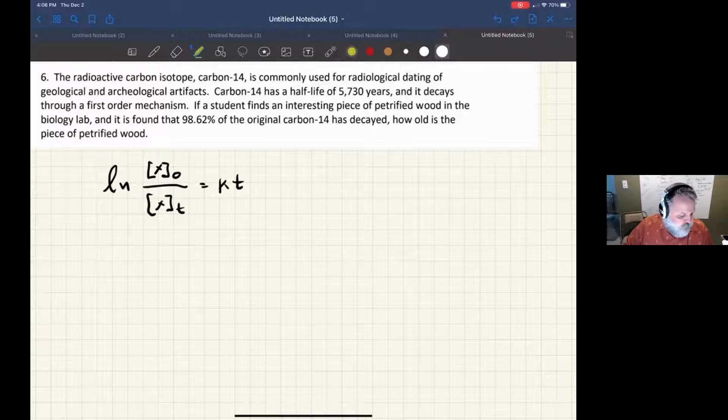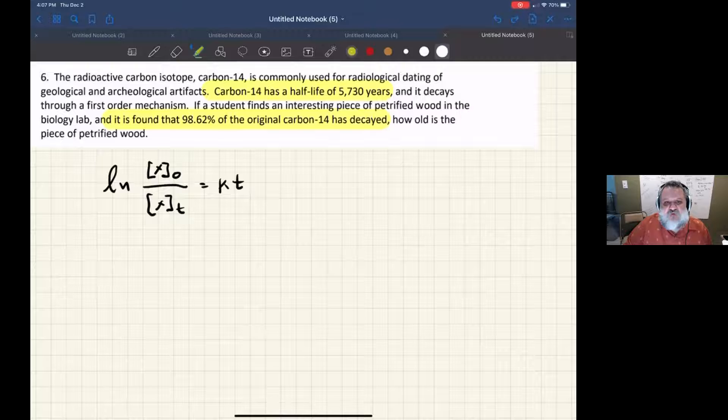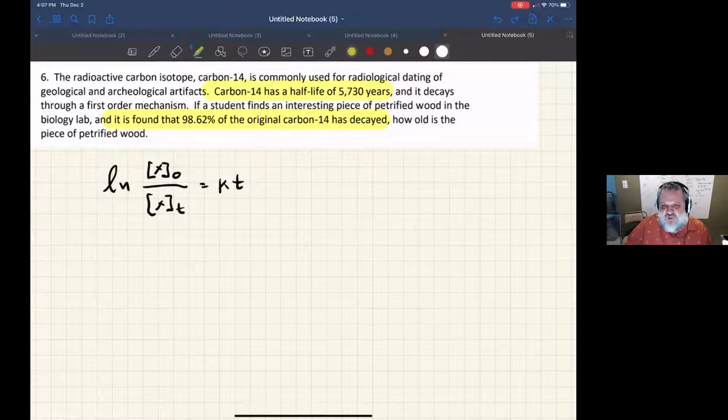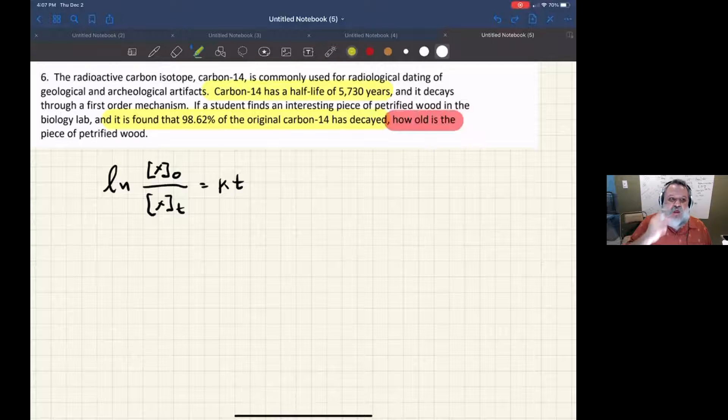Let's look at what information we have. Carbon-14 has a half-life of 5,730 years, and 98.62 percent of the original carbon-14 has decayed. The question asks how old is the petrified wood.